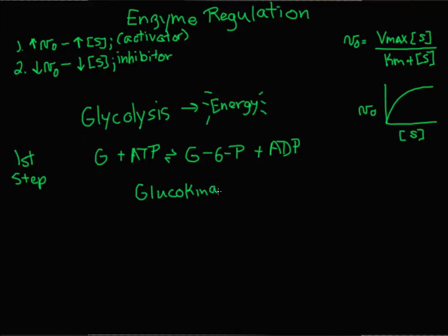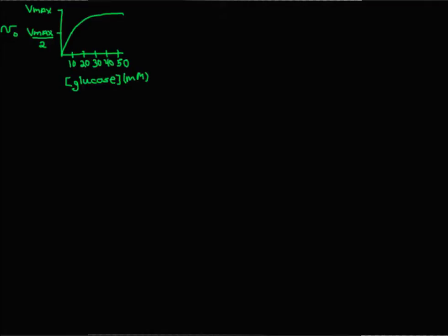Glucokinase is an isozyme of hexokinase, so all these hexokinases catalyze the same reaction. But glucokinase is found in the liver, where it acts more like a glucose sensor. Glucokinase is regulated in part by the substrate concentration. To see that, we look at the effect of substrate on the velocity of the reaction catalyzed by glucokinase — a plot of velocity versus glucose concentration. At high glucose, the change in velocity with the change in substrate is very negligible, essentially zero.